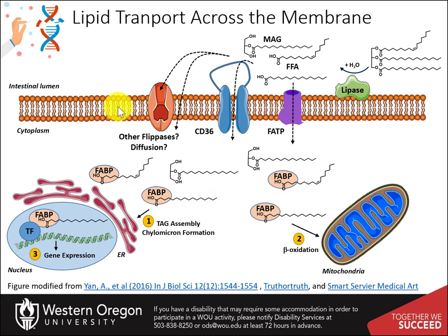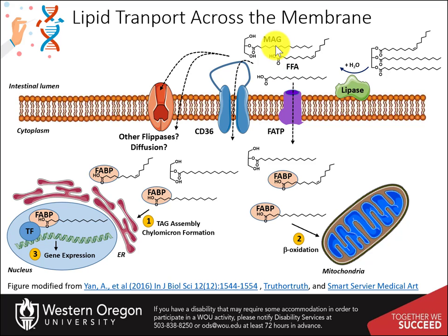The lipid products must then be absorbed by the enterocytes. Here is a close-up of the plasma membrane of the enterocyte. The intestinal lumen is at the top and the cytoplasmic side below. Lipases in the intestinal lumen break down triacylglycerides (TAGs) into two free fatty acids and a monoacylglyceride (MAG). These hydrolysis products are taken up by enterocytes through multiple mechanisms. The CD36 transmembrane protein and fatty acid transport proteins (FATP) have been shown to be involved with lipid transport across the plasma membrane.